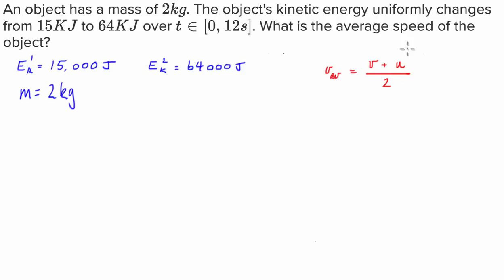Now we've got to figure out how we can calculate these final and initial velocities. Well for that we're going to use the kinetic energy equation which relates velocity to an object's kinetic energy. And that is E_k equals 1 half mv squared.